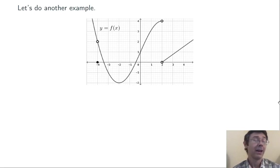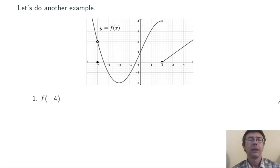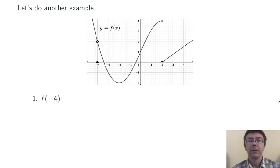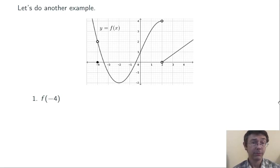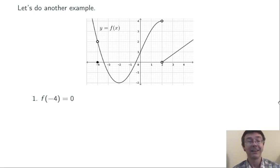Let's do another example. Here's a graph of another function y equals f of x. Let's start by considering what happens at and near x equals negative 4. So f of negative 4 is the value of the function when x is negative 4 — it's the height of that solid dot. f of negative 4 is zero.